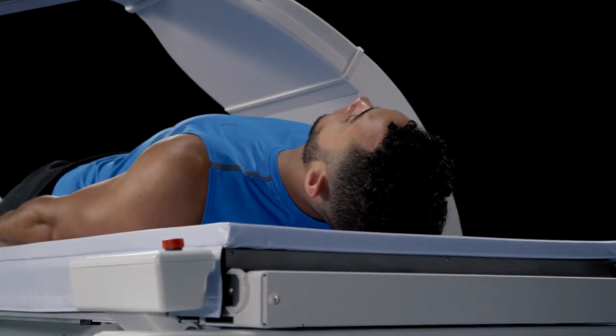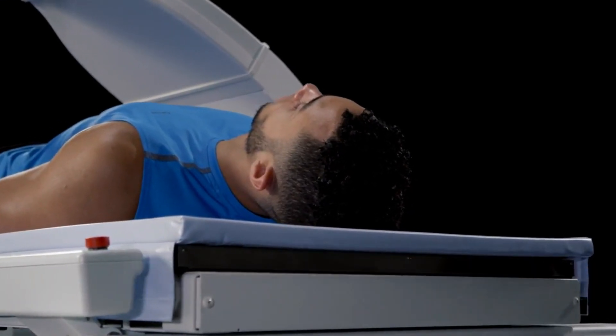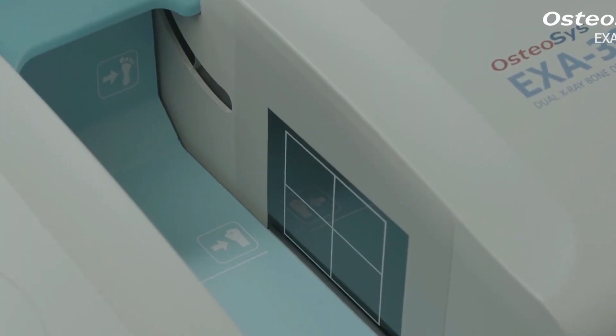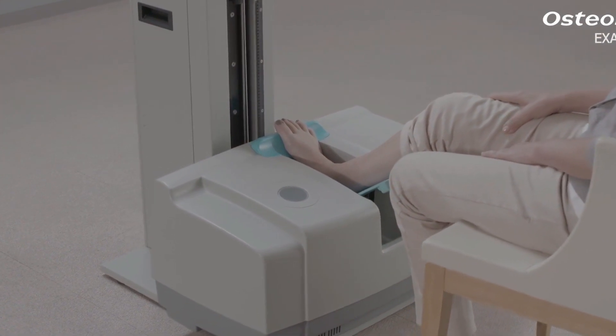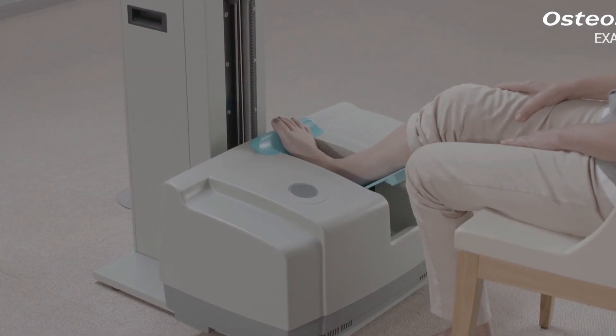Central devices have a large, flat table and an arm suspended overhead. Peripheral devices measure bone density in the wrist, heel, or finger, and are often available in orthopedic clinics and on mobile health vans in the community.